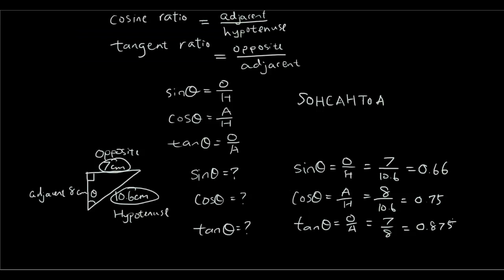So that's how you find the trigonometric ratios in a right-angle triangle. Thanks for watching. See you next time.